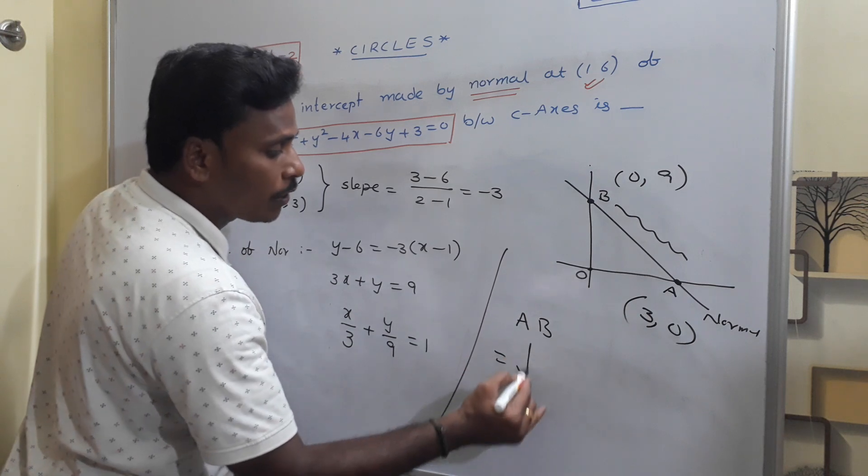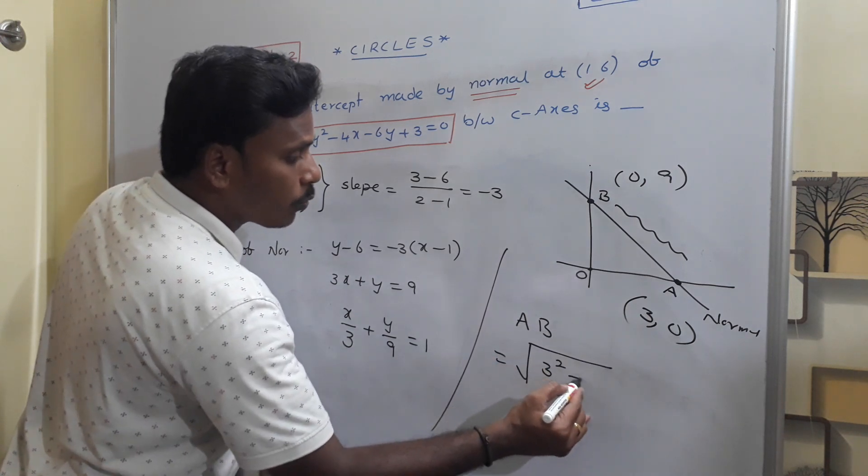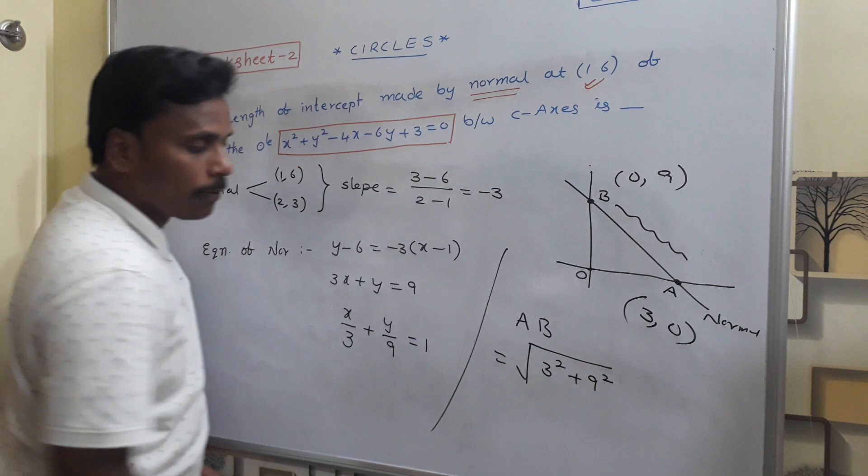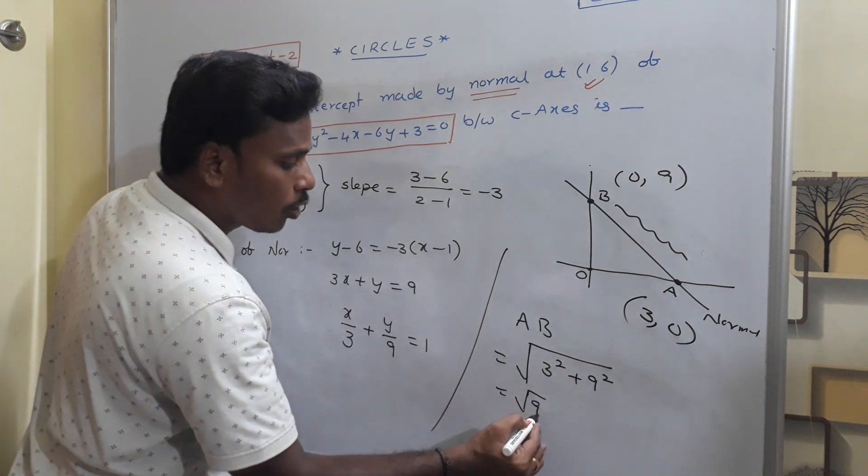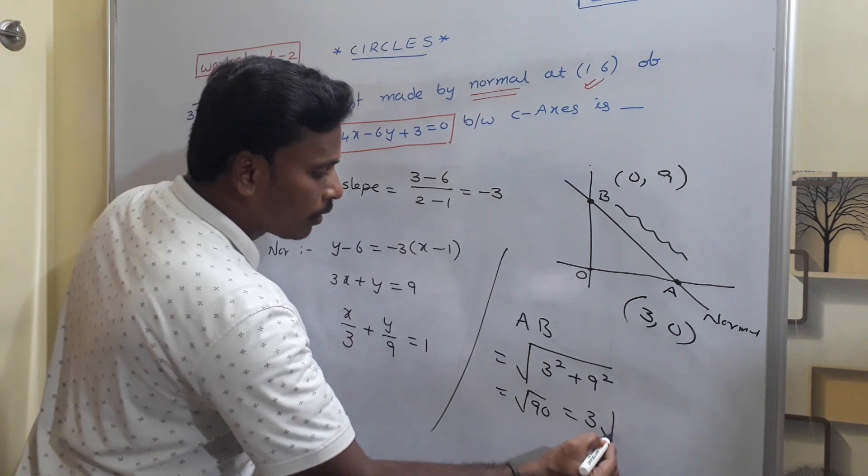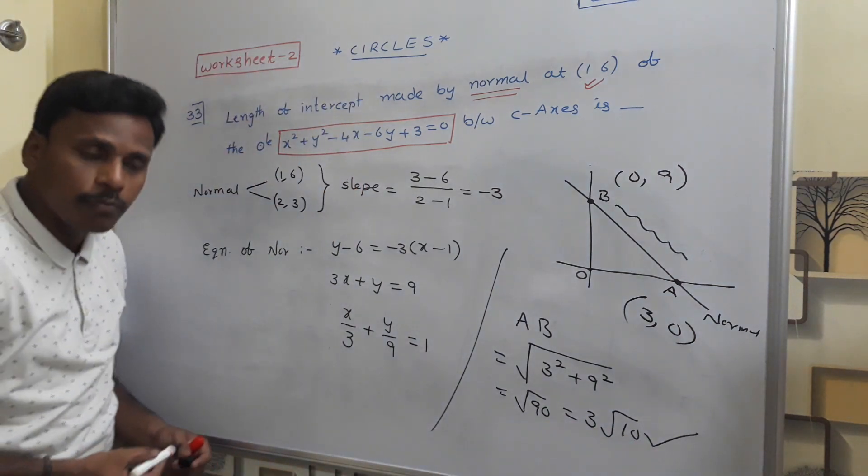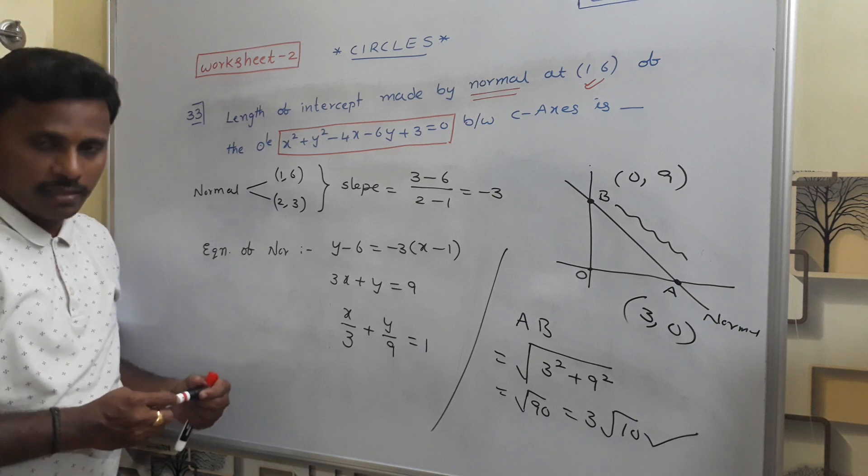So the distance between A and B is simply nothing but square root of 3² + 9². 9² is 81. 81 + 9 is 90. So root 90, which is nothing but 3√10, is the length of intercept made by the normal between the axes.